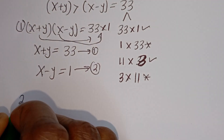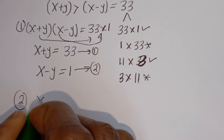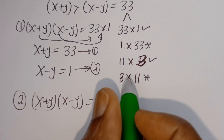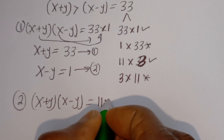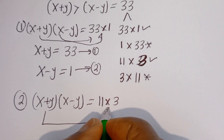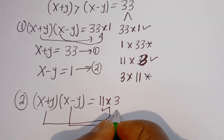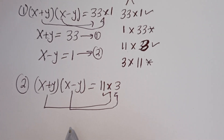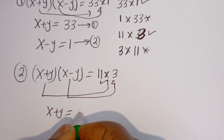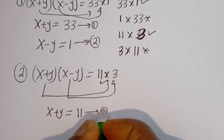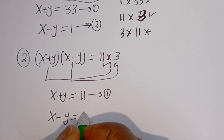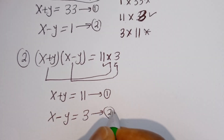From the second case, we have (X + Y)(X - Y) = 11 × 3. So X plus Y equals 11 — this is equation 1 — and X minus Y equals 3 — this is equation 2.